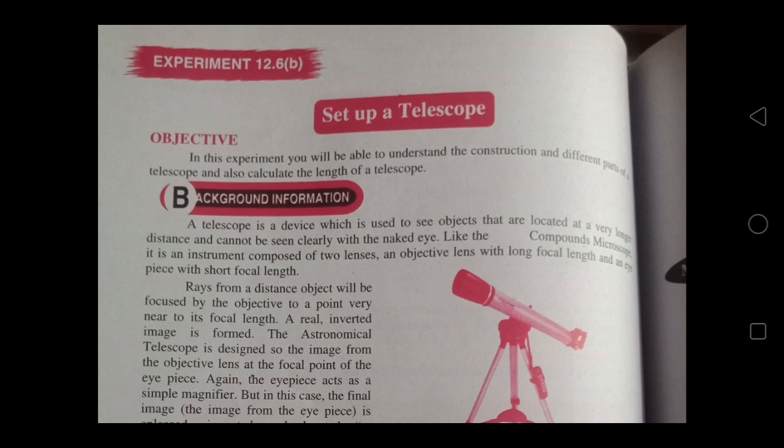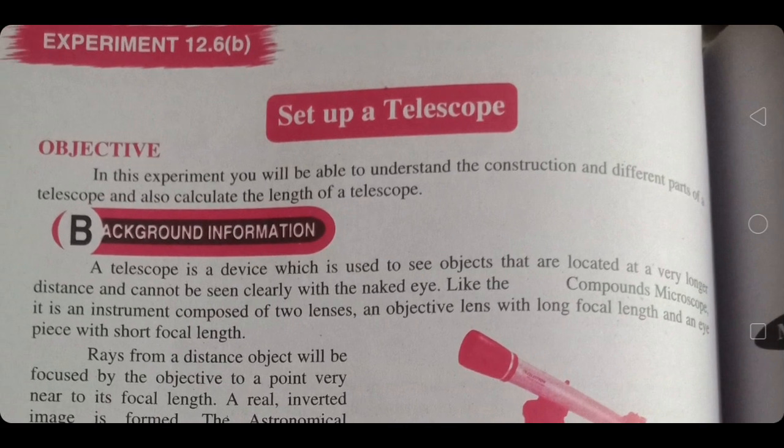A telescope is a device which is used to see objects that are located at a very large distance and cannot be seen clearly with the naked eye. In the case of a telescope, we also use two convex lenses — one lens is the objective lens and the second lens is the eyepiece.